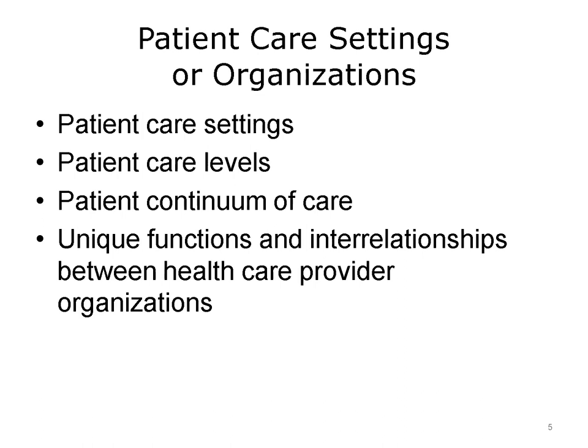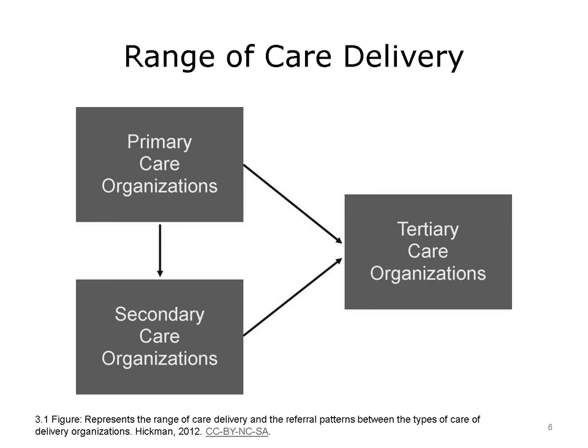Throughout this presentation, the unique functions of various health care organizations are highlighted, and the presentation also provides examples of relationships between health care organizations. Primary care organizations are usually the entry point for health care services. Secondary care is most often specialty care. Tertiary care organizations offer diagnostic and treatment options not available at most health care organizations. Primary care organizations may refer patients to either secondary or tertiary care, and secondary care organizations may also refer directly to tertiary care organizations.